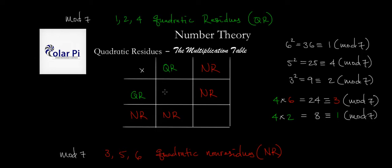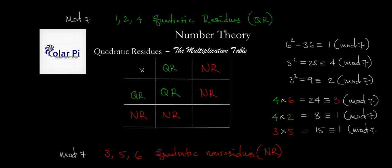So the only mystery now is what happens if we take a non-residue and multiply it by a non-residue. What happens, for example, if we take 3, which is a non-residue mod 7, and then 5, another non-residue mod 7, and multiply them? Well, we'd get 15, which is congruent to 1 mod 7. So a non-residue times a non-residue gives us a residue. So we know how to complete our table — this last part has got to be a quadratic residue. This is the multiplication table for quadratic residues. Keep watching, take care.